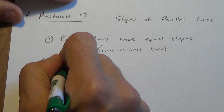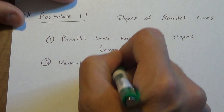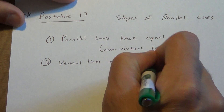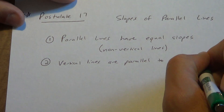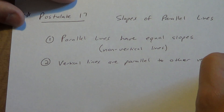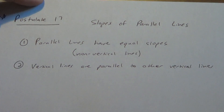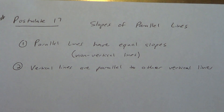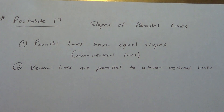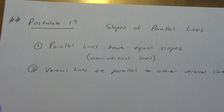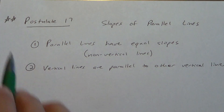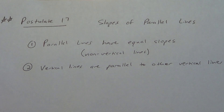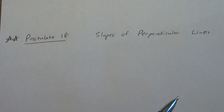This only works for non-vertical lines because vertical lines have undefined slope and you can't say undefined equals something else. However, vertical lines are always parallel to other vertical lines — for example, x equals 5 is parallel to x equals negative 3. Anything that says x equals a number is parallel to anything else that says x equals a number.